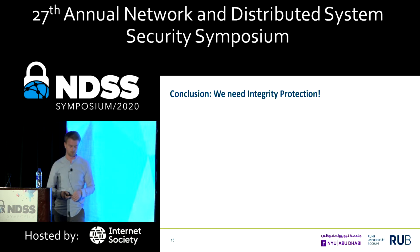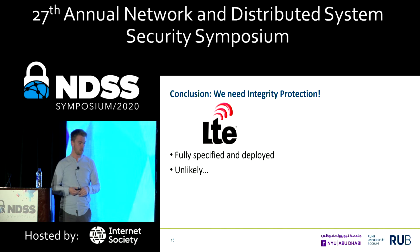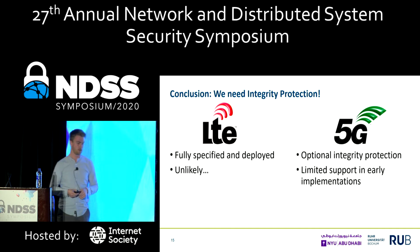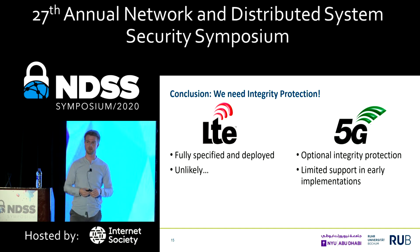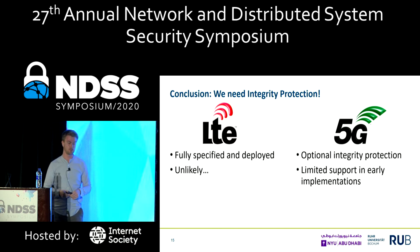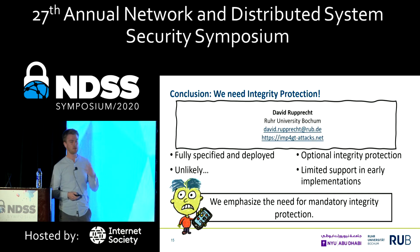The only mechanism that protects against these attacks is integrity protection. LTE has been deployed for nearly 10 years and is fully specified, so it's quite unlikely that user plane integrity protection will be added to LTE. However, we can still do something for 5G. Currently in the 5G specification, integrity protection is optional and limited to 64 kilobit per second, and current deployments will not integrity protect user plane data — so these are also vulnerable. That is why we emphasize the need for mandatory integrity protection in 5G. Thank you and I'm happy to take questions.